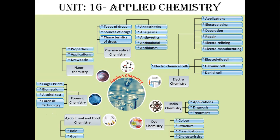The next topic is Electrochemistry, which contains Electrochemical Cells. Electrochemical Cells further develop into many other topics: Electrolytic Cells, Galvanic Cell, and Daniel Cell. Applications include Electroplating, Decoration, Repair, Electrorefining, and Electromanufacturing. These are the topics contained in Electrochemistry.